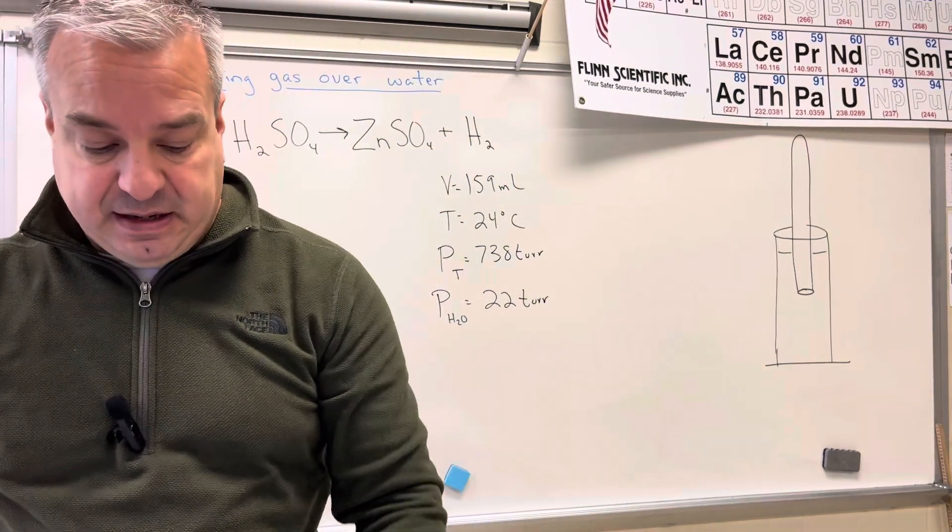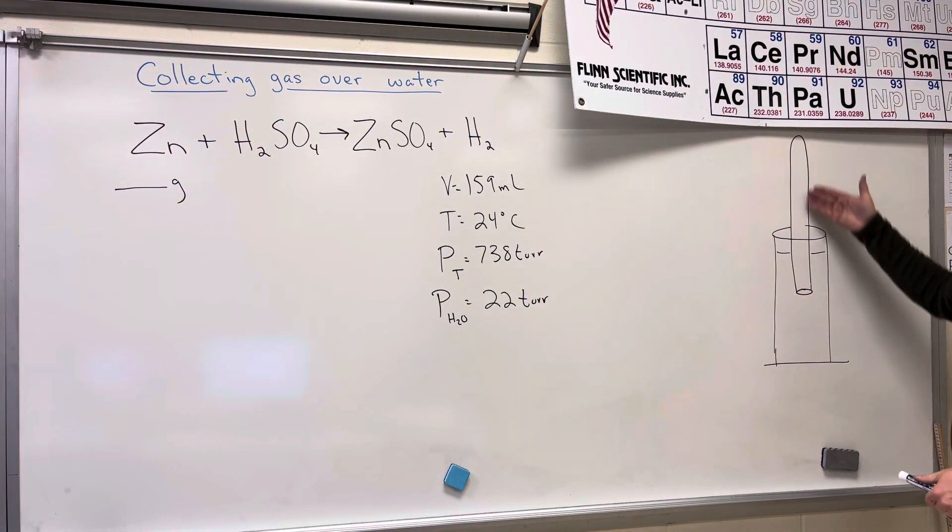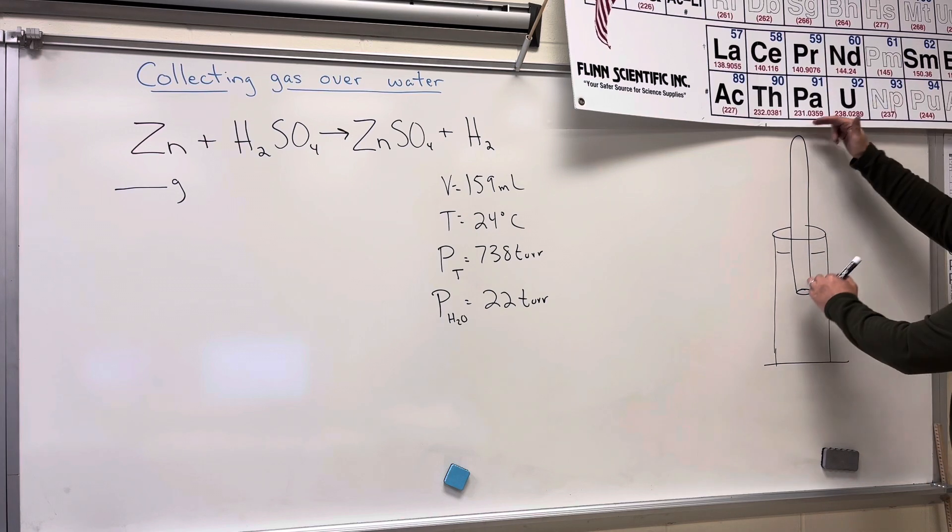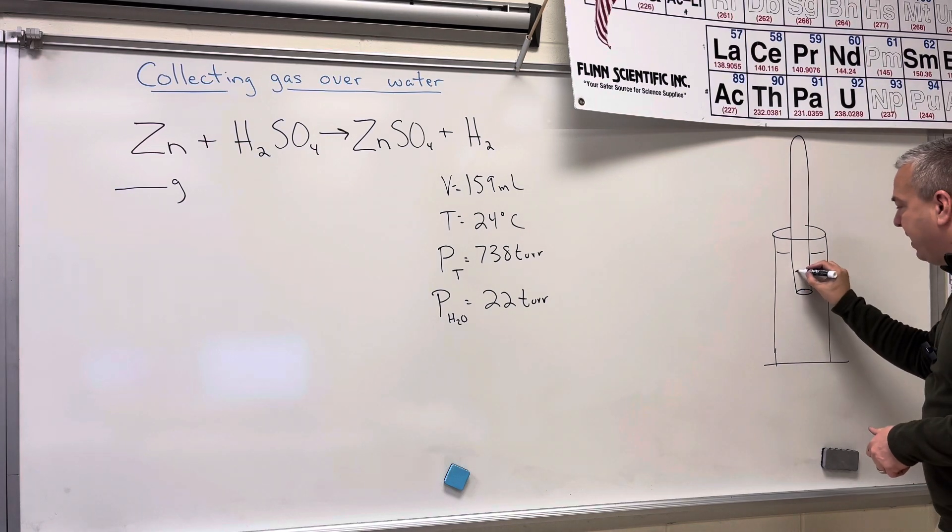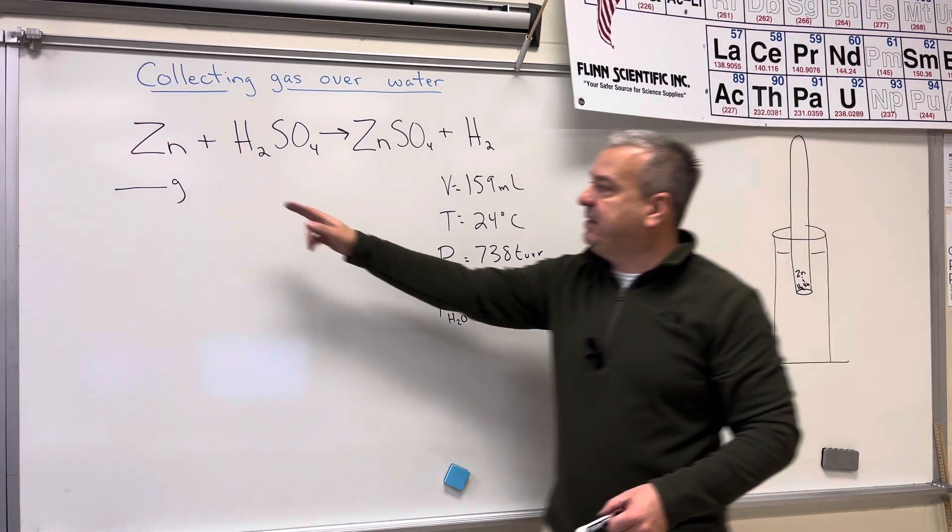So basically what I have is drawn over here. Here's my graduated cylinder with my gas collecting tube. I have it filled with water. And I'm going to have the zinc and the sulfuric acid react down here.